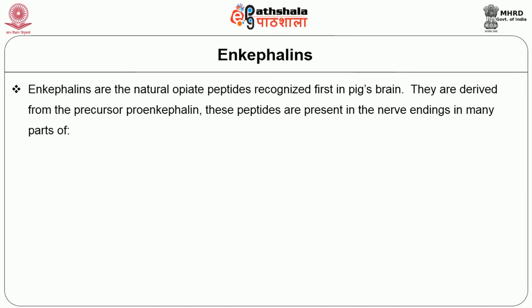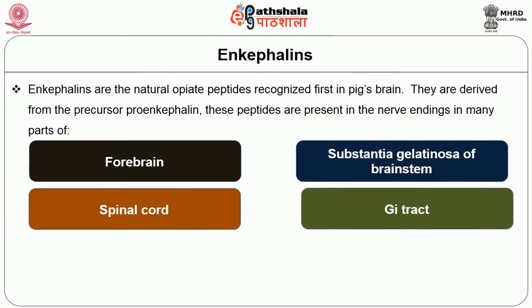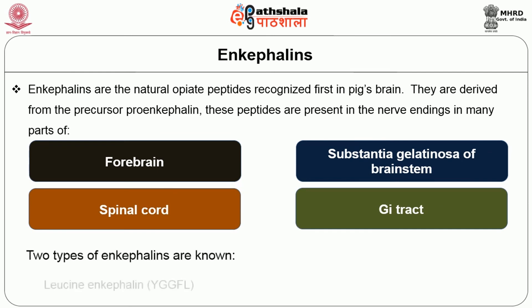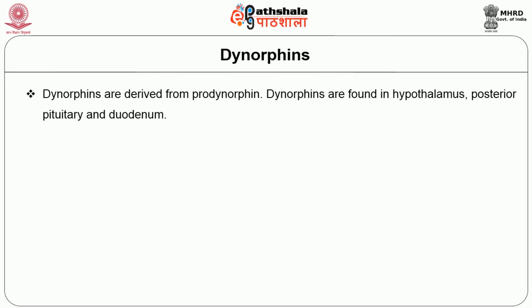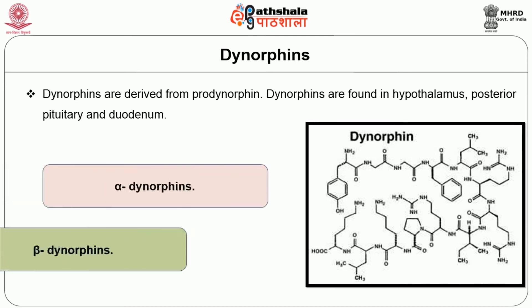Enkephalins are the natural opiate peptides first recognized in pig brain. They are derived from the precursor pro-enkephalin and are present in nerve endings in many parts of the forebrain, substantia gelatinosa of the brain stem, spinal cord, and GI tract. Two types of enkephalins are known: leucine-enkephalin and methionine-enkephalin. Dynorphins are derived from pro-dynorphin and are found in the hypothalamus, posterior pituitary, and duodenum. Dynorphins are of two types: alpha and beta dynorphins.